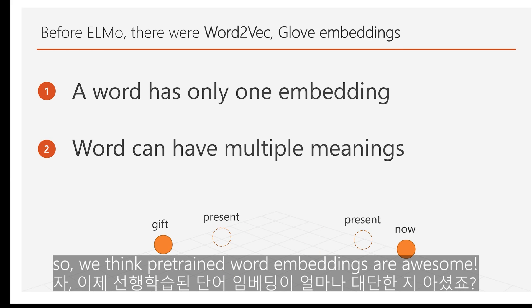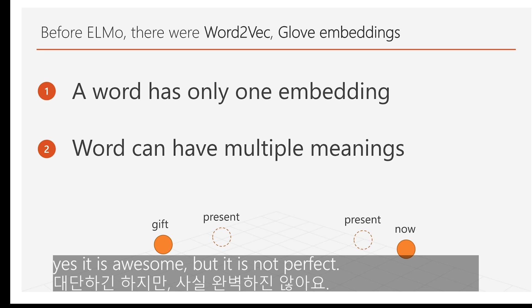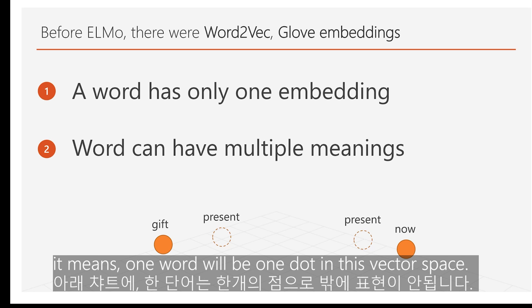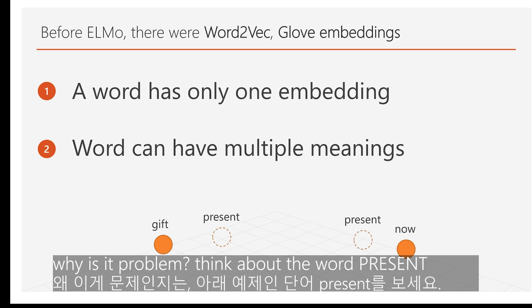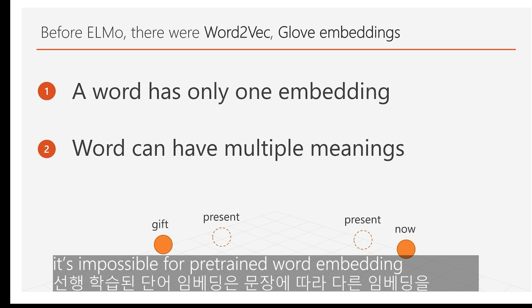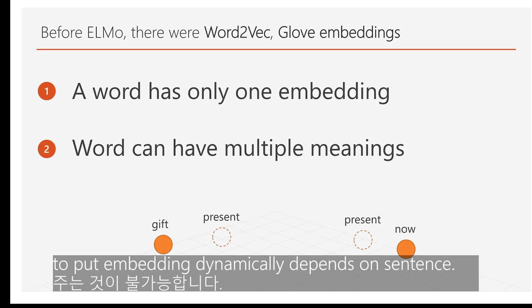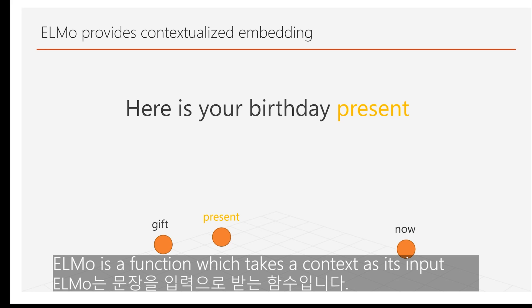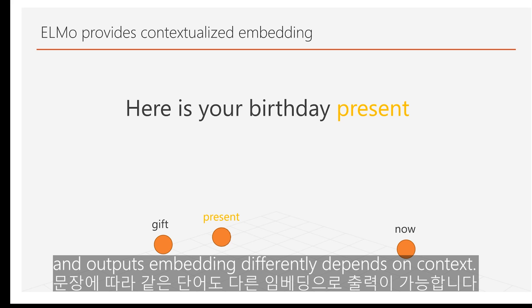So pre-trained word embeddings are awesome, but they are not perfect. The first problem is that pre-trained word embeddings only have one numeric representation — one word is located in only one place in vector space. Think about the word 'present': it sometimes means 'gift' and sometimes means 'now', depending on context. It is impossible for pre-trained word embeddings to place a word dynamically in vector space depending on context.